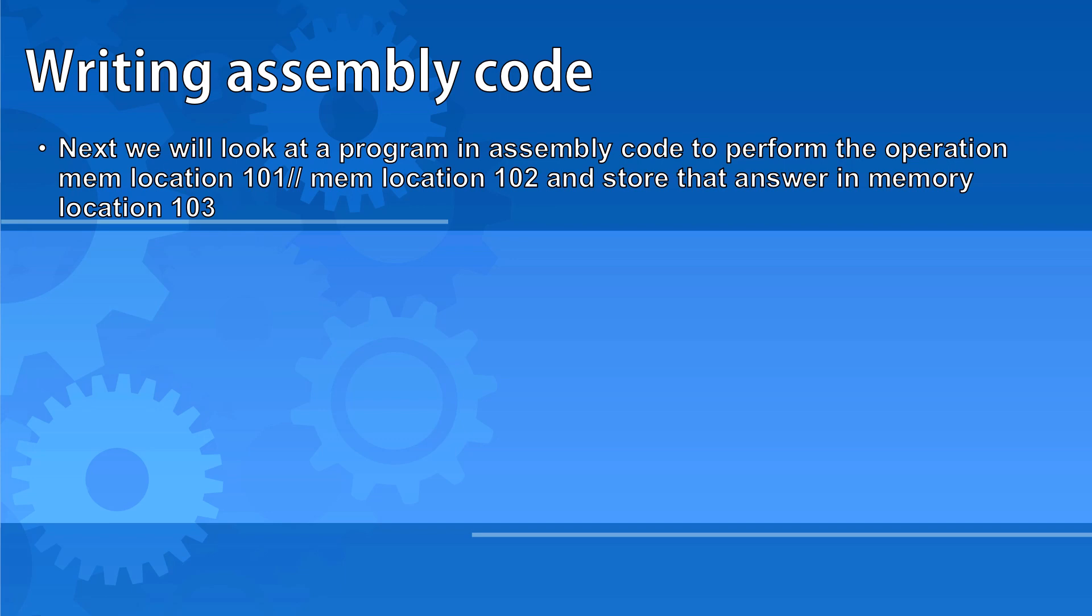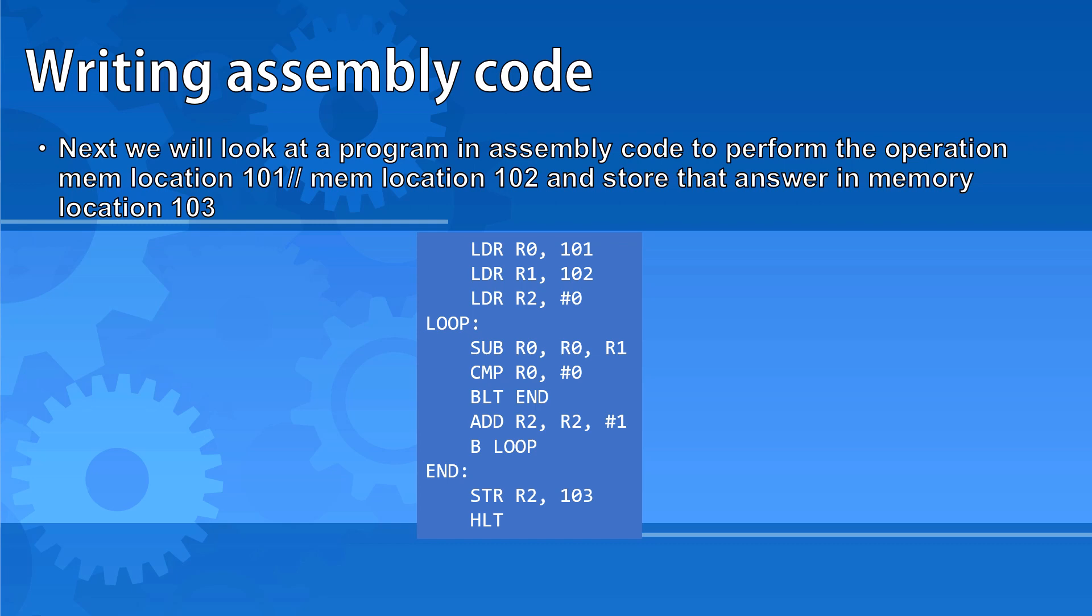It's not possible to perform division or floor division in assembly code. So instead, what I'm going to do is load the value from location 101 into register 0, load the value from location 102 into register 1, and use register 2 as a count to be able to count the number of times I can take the value in register 1 away from the value in register 0 before it becomes negative. This all presumes that my registers are able to work with two's complement binary.